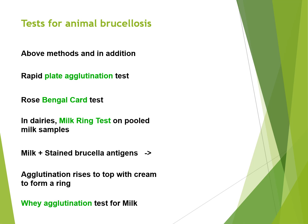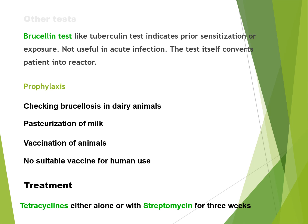For testing animal brucellosis, there is also the rapid plate agglutination test and the rose bengal card test. In dairies, the milk ring test is performed on pooled milk samples — milk is mixed with stained antigens and the agglutination rises to the top with the cream to form a ring. There is also the whey agglutination test for milk. Other tests include the Brucellin skin test, similar to the tuberculin test, which indicates prior sensitisation or exposure and is not useful in acute infection. The test itself converts the patient into a reactor.